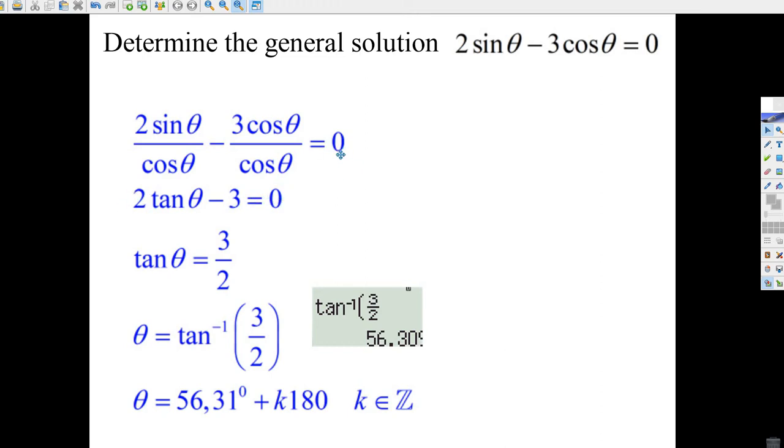0 divided by cos is 0. So I just divided both sides by cos theta. Then you add 3 and divide by 2. And you've just about got your answer. The tangent of theta is equal to 3 halves.